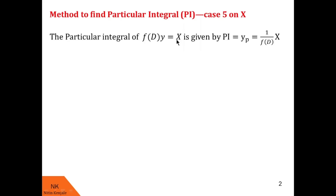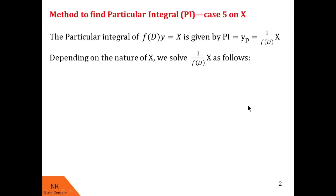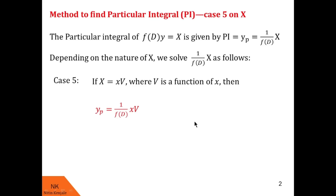Let f(D)·y = X be the linear differential equation with constant coefficients. Then its corresponding particular integral is given by yp = 1/f(D) of X. Now, if this RHS X is of the type x·v, then the corresponding particular integral yp, that is 1/f(D) of xv, can be calculated as x minus 1/f(D) times f'(D) times 1/f(D) of v. Note that v is a function of x — it could be an exponential function, an algebraic expression in x, or a trigonometric function of the type sin(ax) or cos(ax).